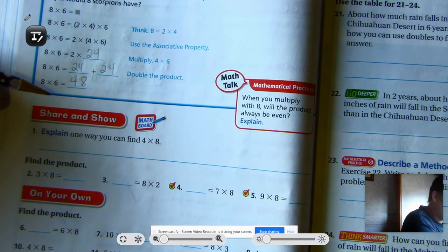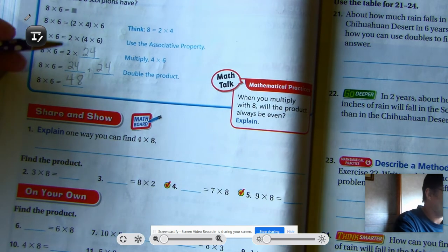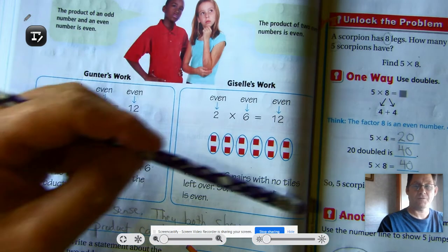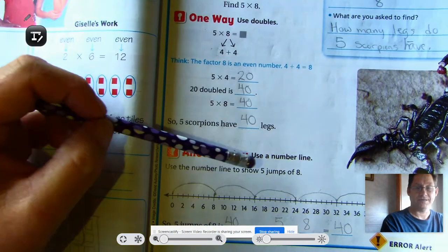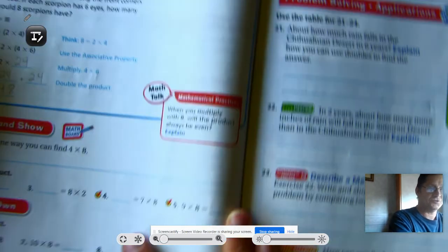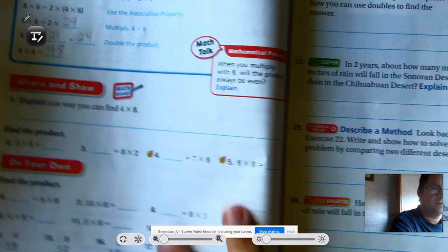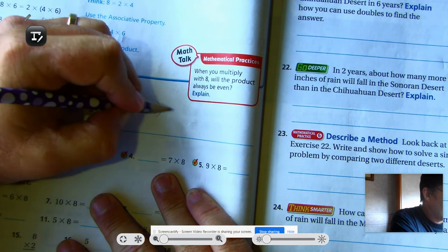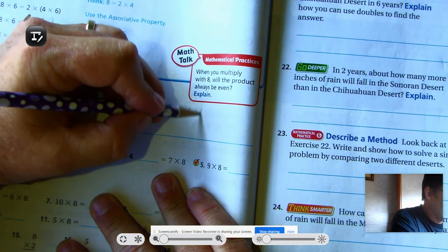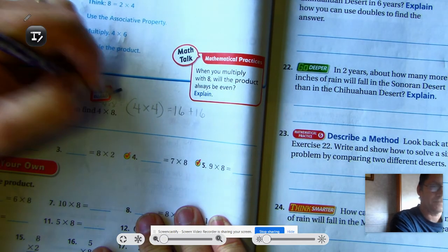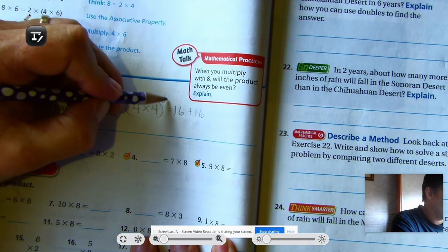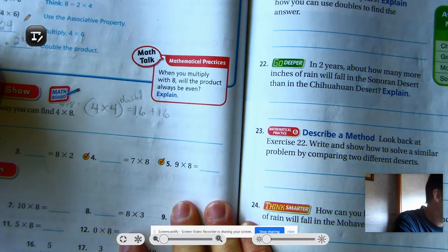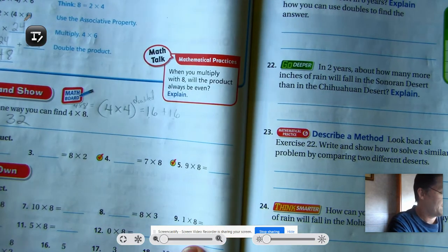Alright, number one, explain one way you can find four times eight. Alright, well, so we can go back and we're going to use one of our three methods. We can use doubles, we can use a number line, or we can use the associative property. So you have to choose one of those ways to explain number one. Alright, so I think I'll use doubles, and so four times four equals 16. So four times eight equals four times four doubled. Alright, so that's why we have 16 plus 16. 16 plus 16 is 32.